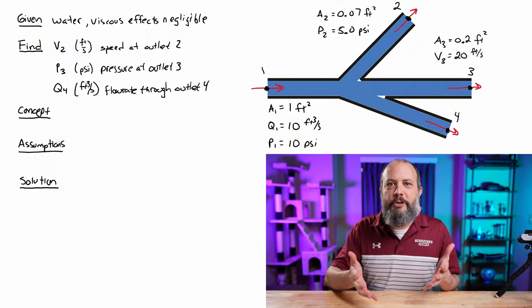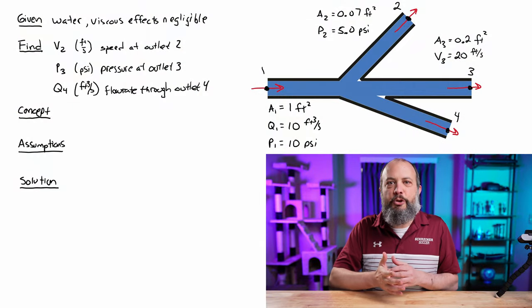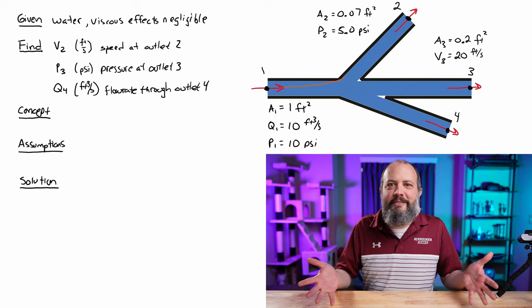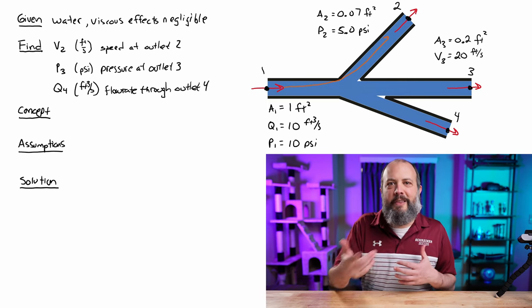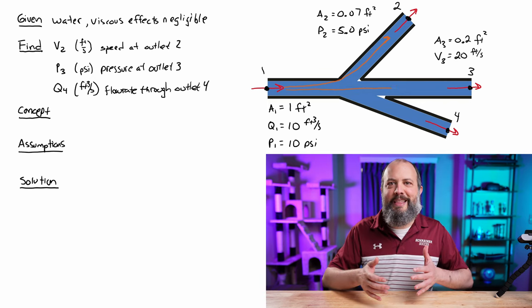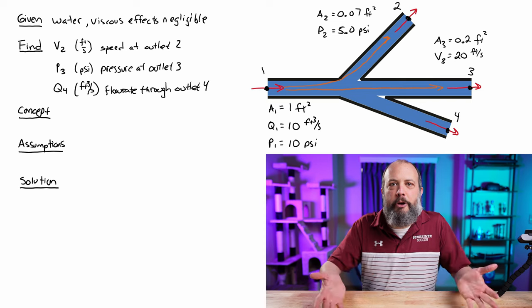We're given that the working fluid for this system is water and that you can ignore viscous effects. Using all of the information given in the figure, we're trying to find velocity through outlet two, pressure through outlet three, and then the volumetric flow rate through outlet four.